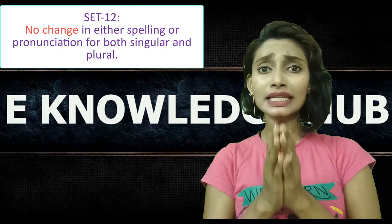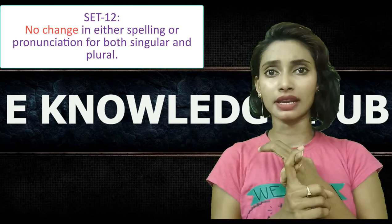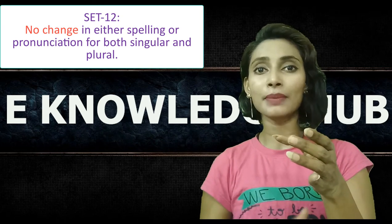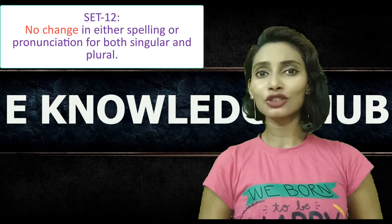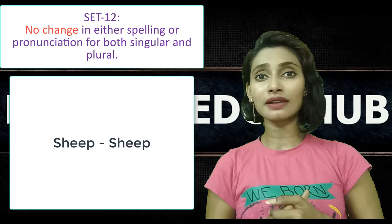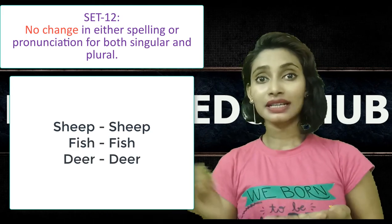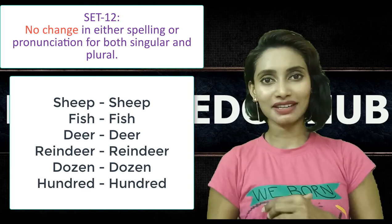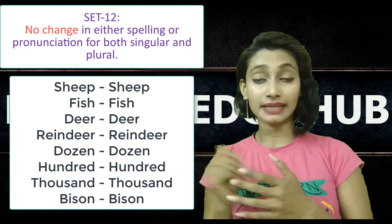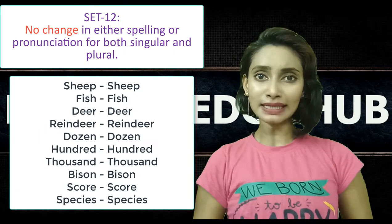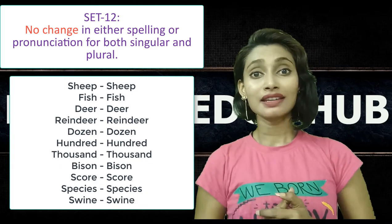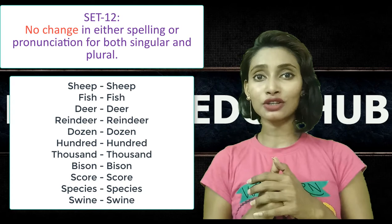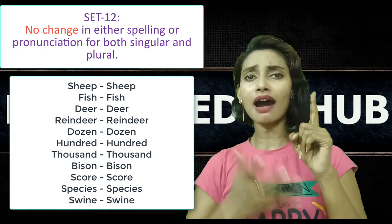Let's move to set 12. There are some words where there is no differentiation either in spelling or pronunciation — both singular and plural forms are the same. Only in usage can we show the differentiation based on the situation. Those nouns are: sheep, fish, deer, reindeer, dozen, hundred, thousand, bison, score, species, swine. There is no differentiation in spelling or pronunciation, but while using in a sentence, you can use either a singular or plural verb to indicate one or more than one.